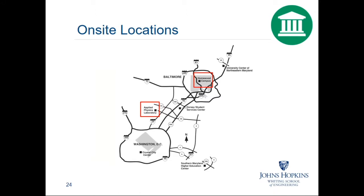If you're asking yourself where is the Applied Physics Laboratory and where is the Homewood campus, here is a map of the Washington DC and Baltimore metro areas. The Applied Physics Laboratory is located in Laurel, Maryland, kind of between Baltimore and DC. The Homewood campus is located right in the heart of Baltimore. The majority of the on-site course offerings available in this program are taught at the Applied Physics Laboratory. Our full-time program in mechanical engineering is conducted in residence at our Homewood campus in Baltimore.